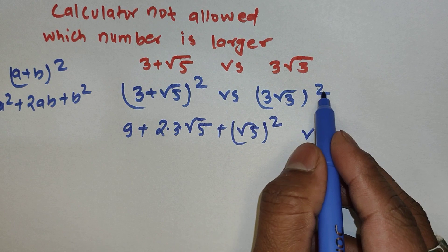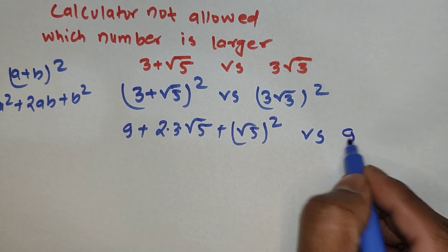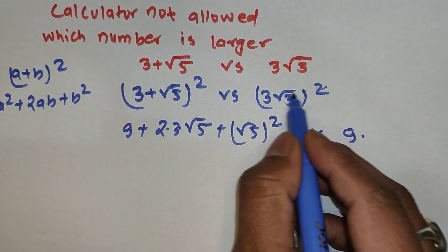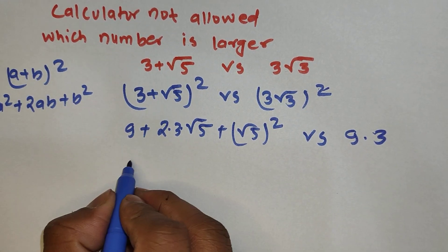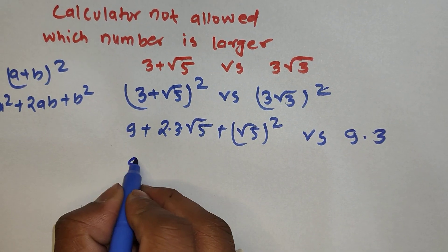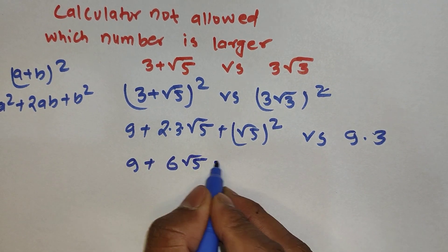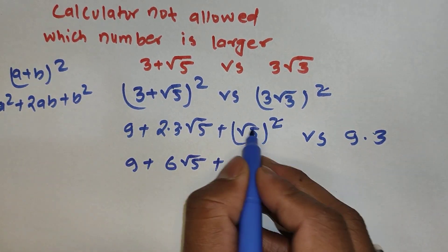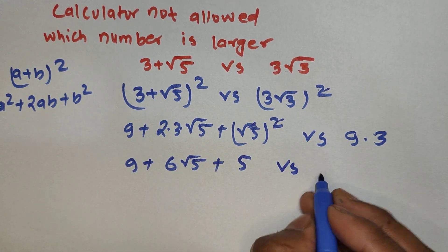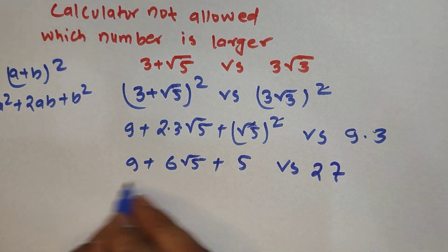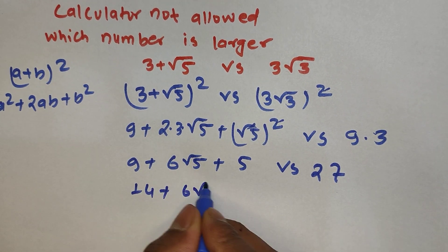On the right side, (3√3)² gives us 3² times (√3)². The square and square root cancel, leaving 3, so we get 9 times 3 = 27. The left side simplifies to 9 + 6√5 + 5, which is 14 + 6√5, versus 27.